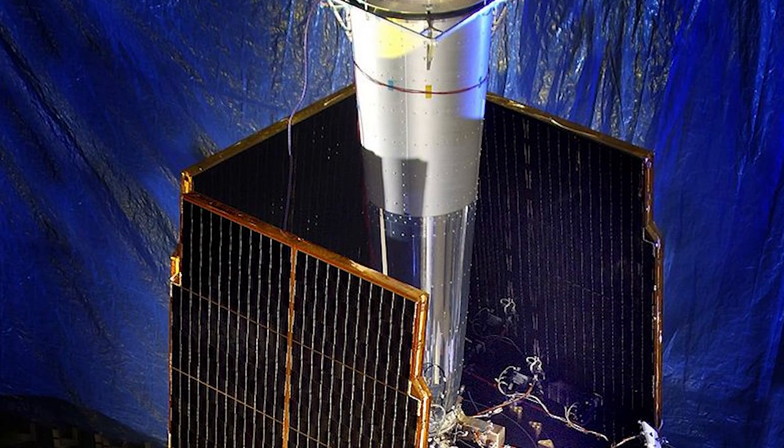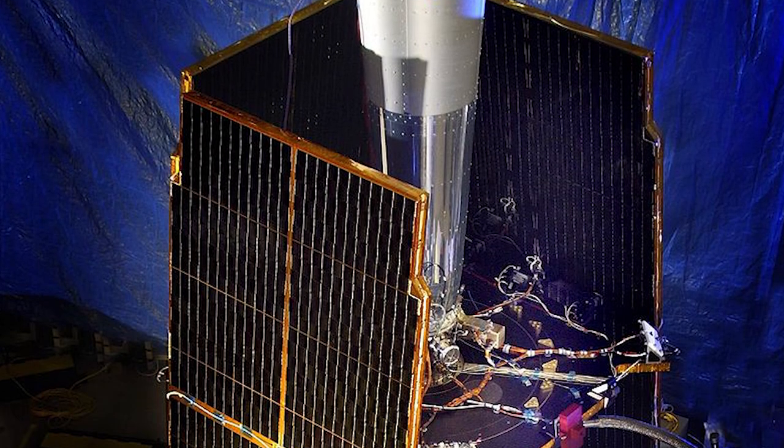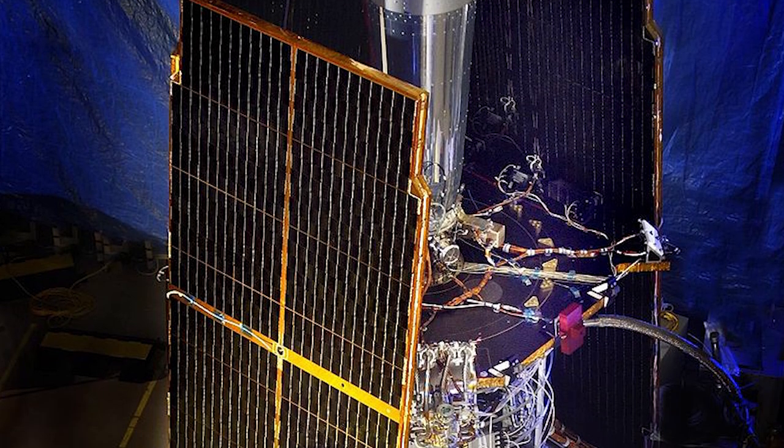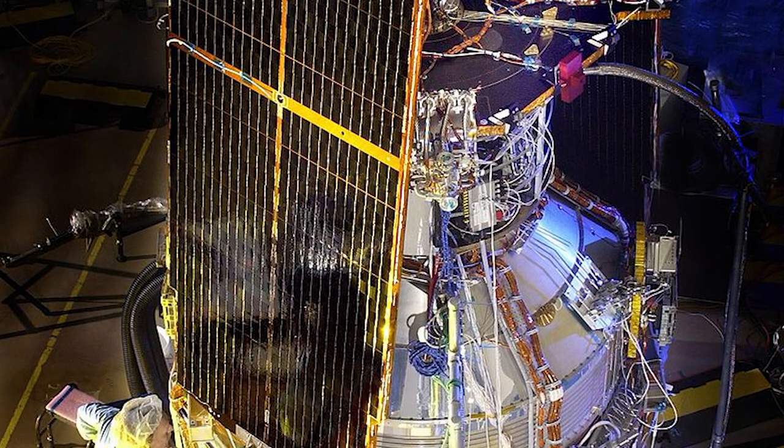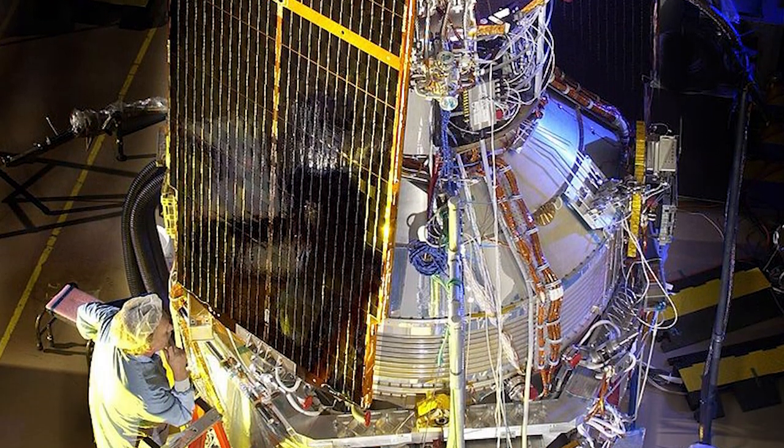The Gravity Probe B satellite, which measures the bending of space-time due to Earth, was launched in 2004. In 2011, Stanford University found that data from the satellite largely confirmed Einstein's theory.